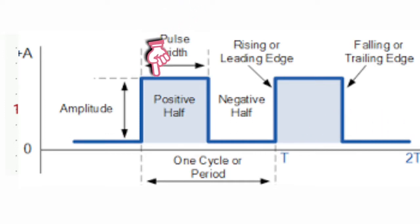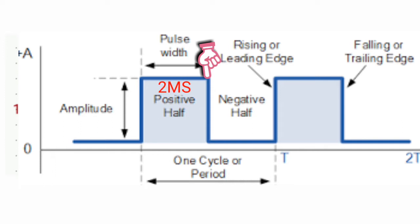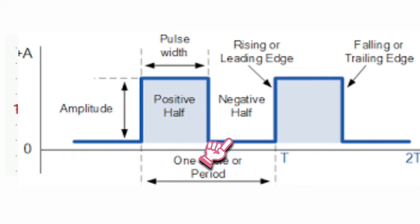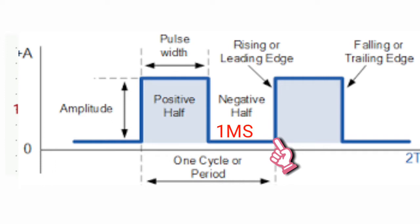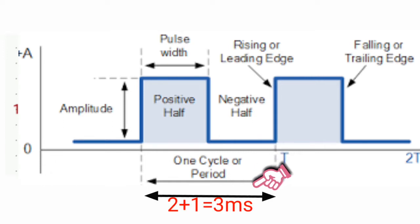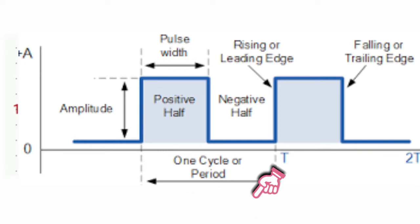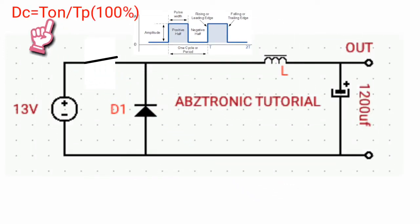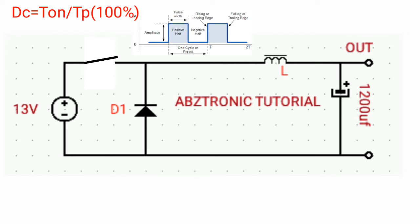From this point to this point is the time on. Let's say the time on is two milliseconds, then from this point to this point is the off time of one millisecond, giving us a total period of three milliseconds. The duty cycle formula will be equivalent to time on divided by the period of time, times one hundred percent.